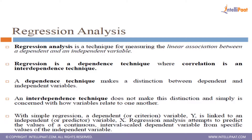Correlation is called an interdependence technique. In an interdependence technique, it does not make any distinction between independent or dependent — variables are simply interrelated. For example, duration of stay in a city and attitude towards the city are correlated. In a dependence technique like regression, a distinction is made between dependent and independent variables.